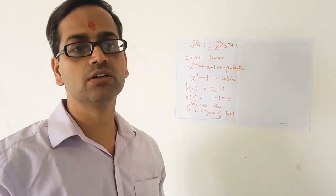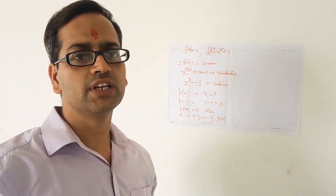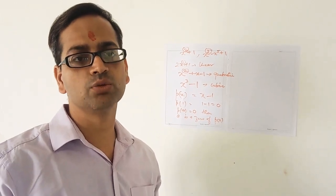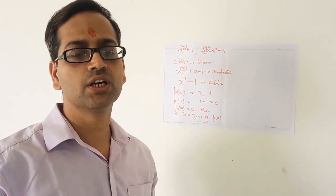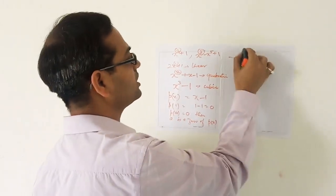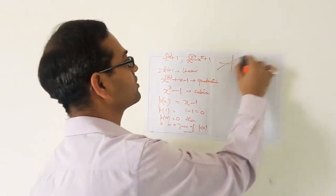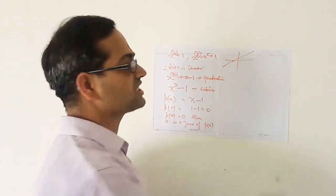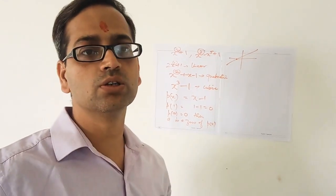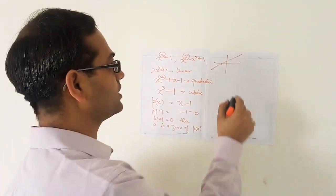Next we discuss the geometrical meaning of zeros of a polynomial. For any polynomial in variable x, the number of points where the graph of the polynomial intersects the x-axis are the zeros of the polynomial. For example, the graph of a linear polynomial is a straight line, and it intersects the x-axis at only one point, so it has exactly one zero.